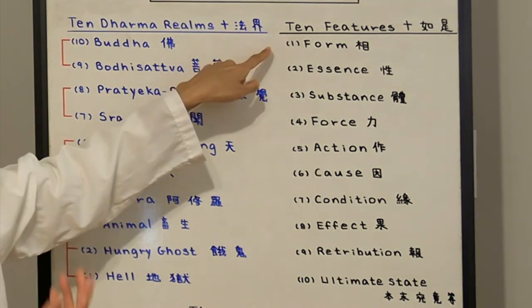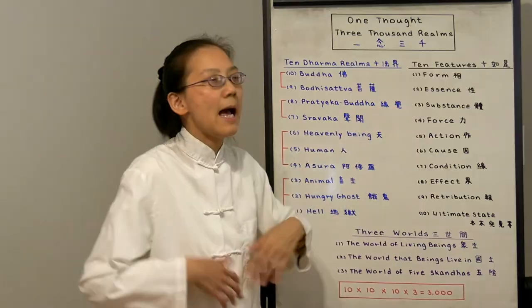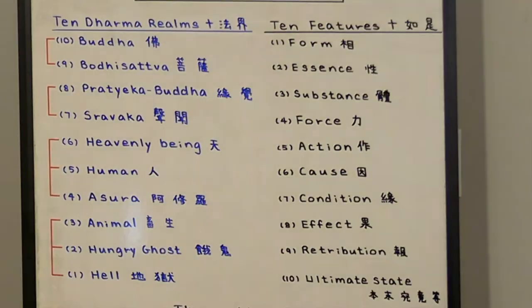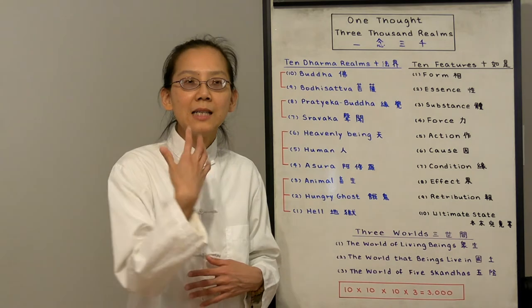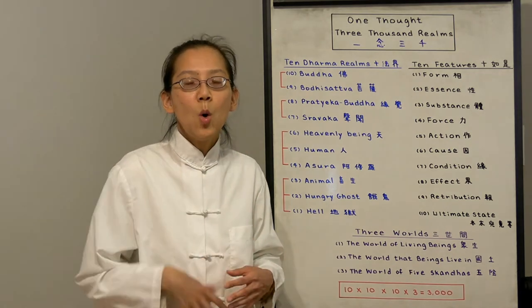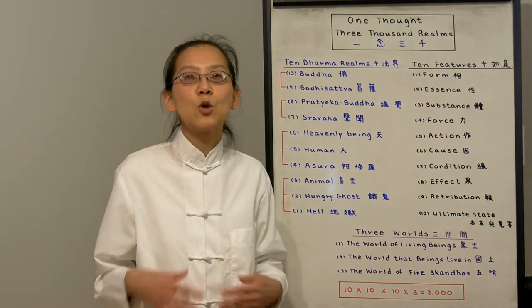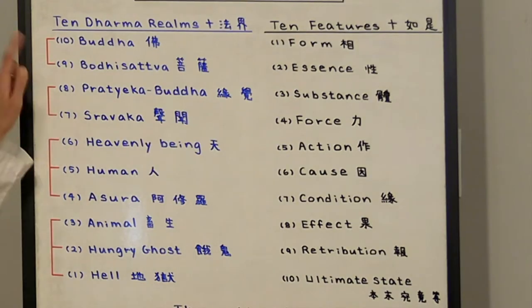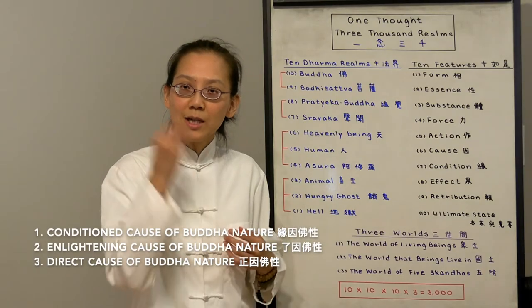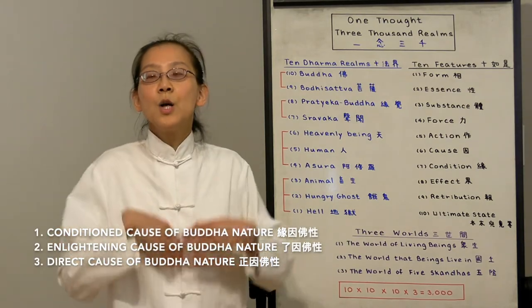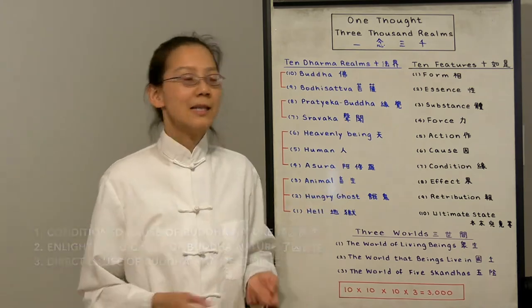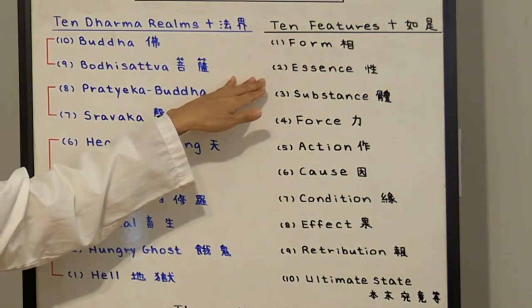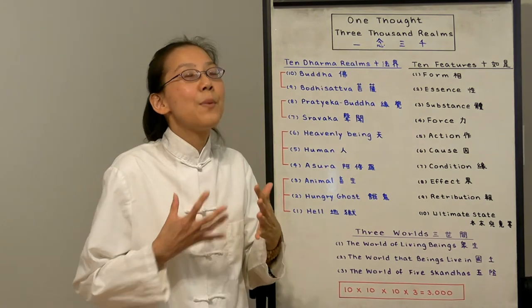Number one, every realm has their own forms—their outer appearances. Hell beings, their forms are full of suffering and torment. They're always in punishment, in presence of boiling water, ice, fire, and their body can be torn into pieces. So they're always in pain and suffering. In contrast, Buddha—their form is a conditioned cause of Buddha nature. They're full of goodness and merits.